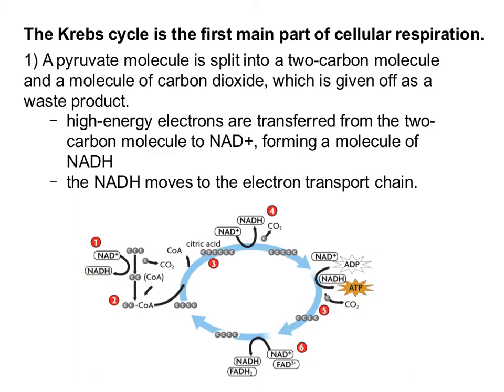We're going to go through the Krebs cycle step by step starting with step one. In step one, we're going to see that the three-carbon molecule pyruvate — notice it's just one of them, but we produced two from glycolysis — the first thing we're going to do is rip off one of those carbons in the form of carbon dioxide, and you can see right here there's one carbon dioxide molecule being released in this process.